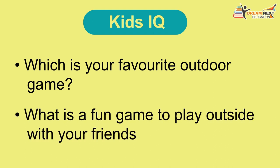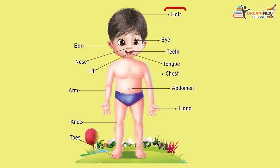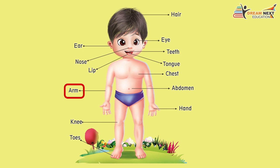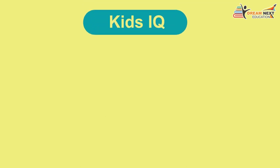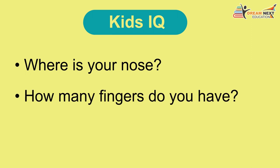Parts of my body: hair, eye, ear, teeth, nose, tongue, lip, chest, arm, abdomen, knee, hand, toes. Kids IQ: Where is your nose? How many fingers do you have?